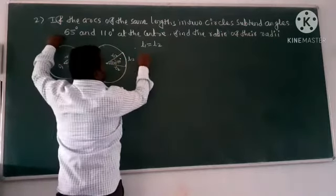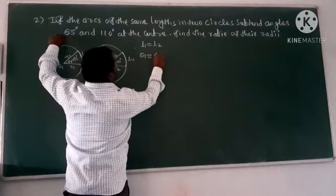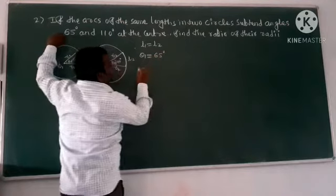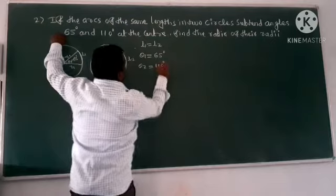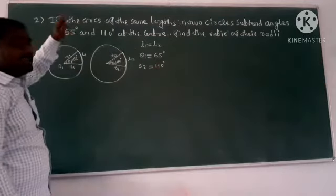So theta 1 is equal to 65 degrees. So theta 2 is equal to 110 degrees. It is equal to the radius.